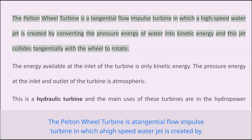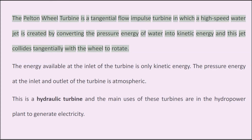The Pelton wheel turbine is a tangential flow impulse turbine in which a high-speed water jet is created by converting the pressure energy of water into kinetic energy, and this jet collides tangentially with the wheel to rotate it.